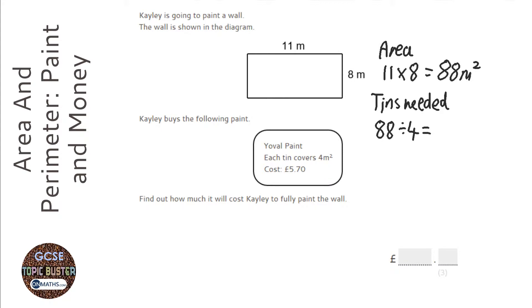So, what I can do is I can work out how many 4s there are in 88. Now, you can do this with the bus stop method. So, 4 on the outside and 88 on the inside. 4s into 8 go twice. 4s into 8 go twice. So, the answer is going to be 22.